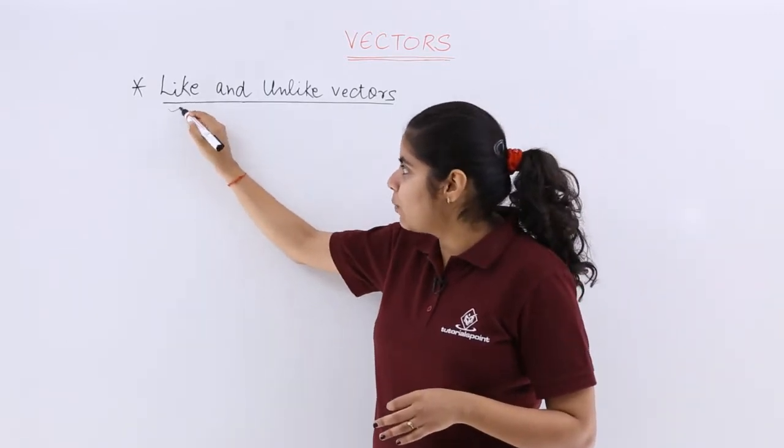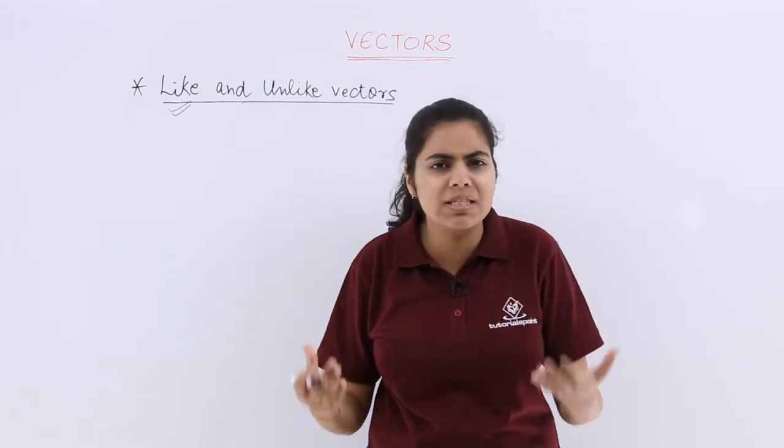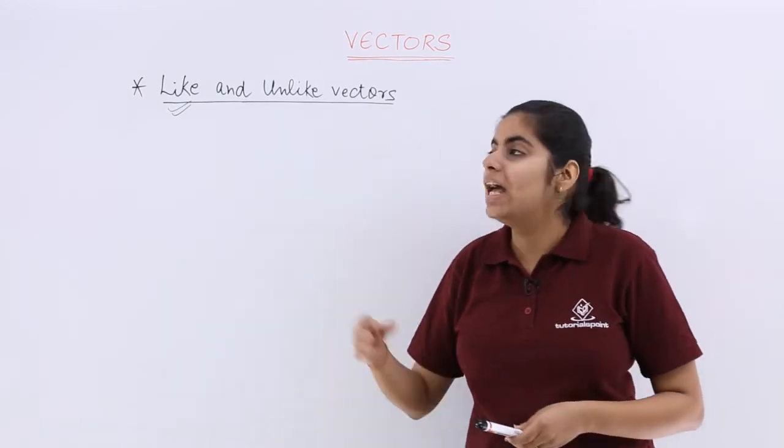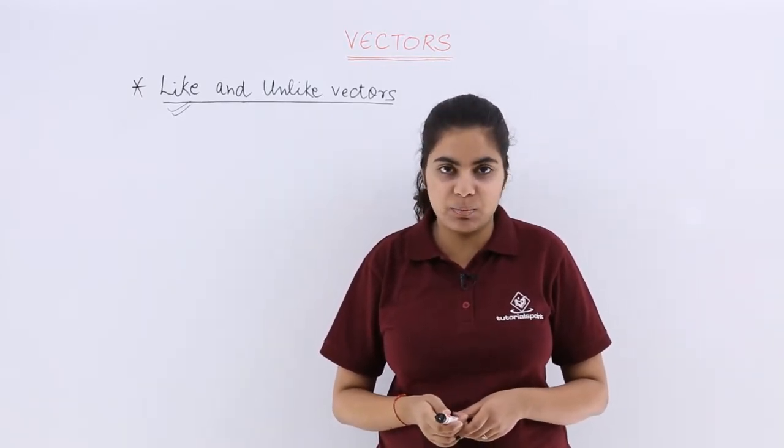So again speaking, specifically like vectors are the ones which have the same sense of support, while unlike vectors are the ones which have opposite direction or opposite sense of support.